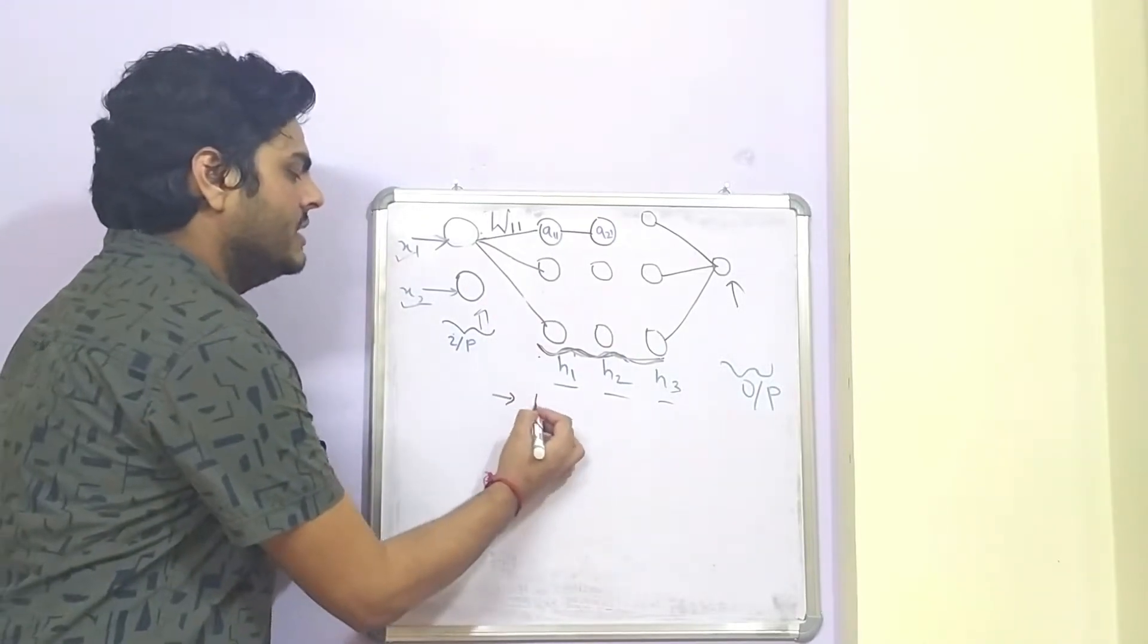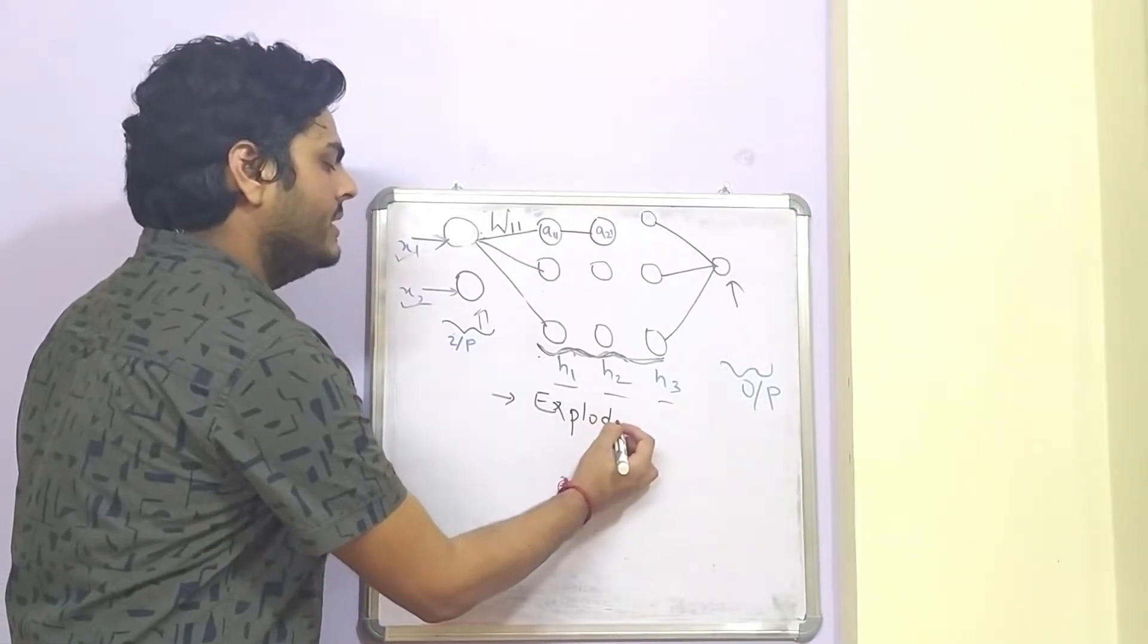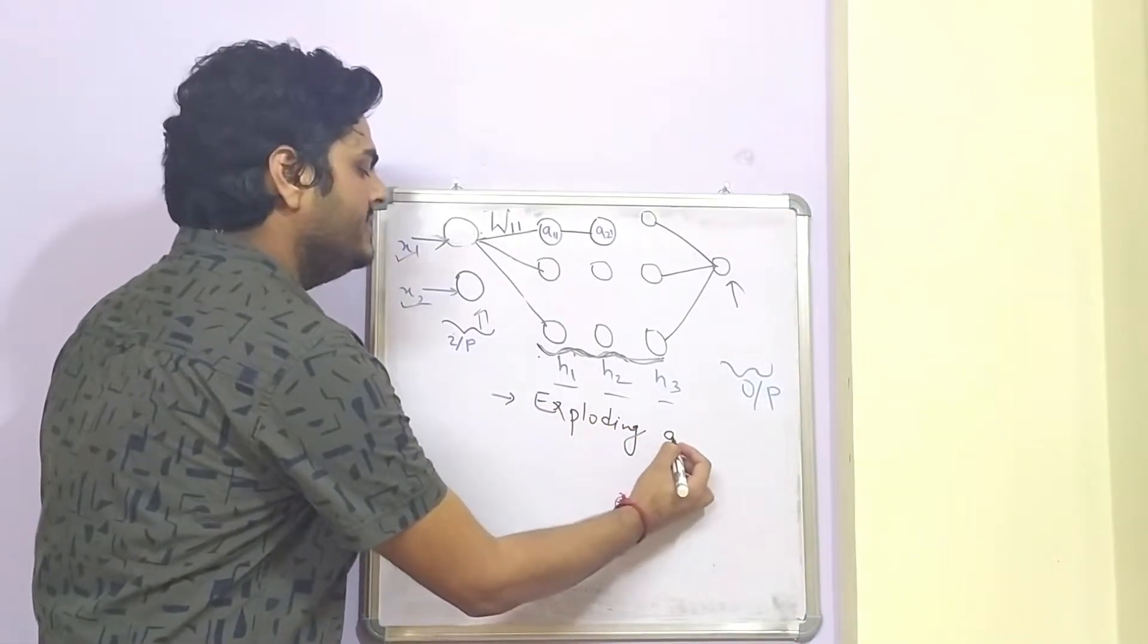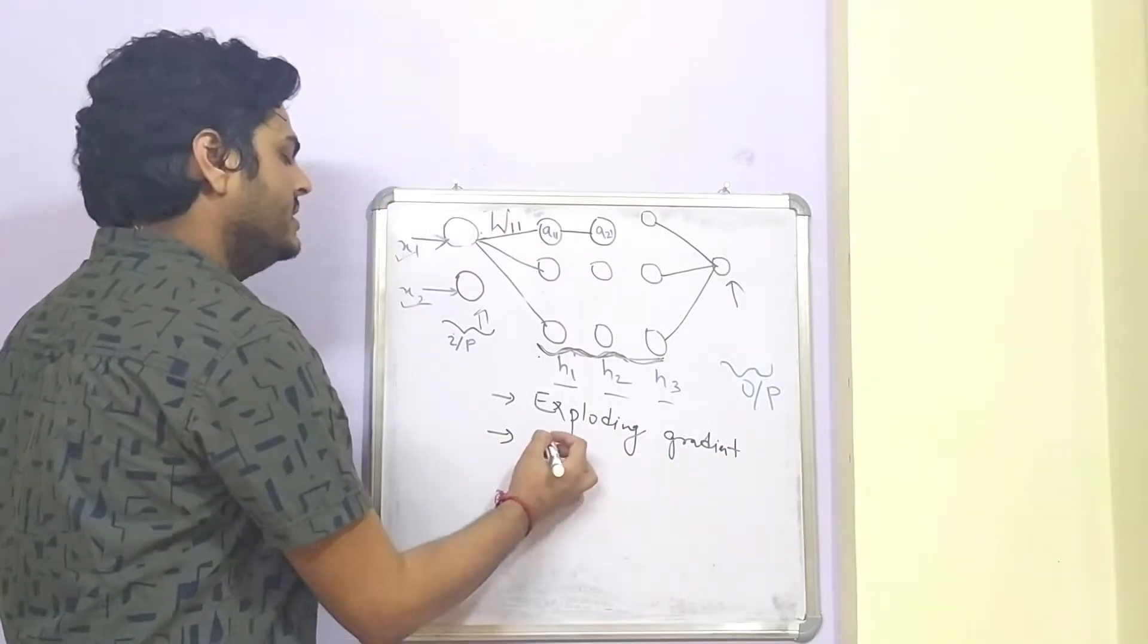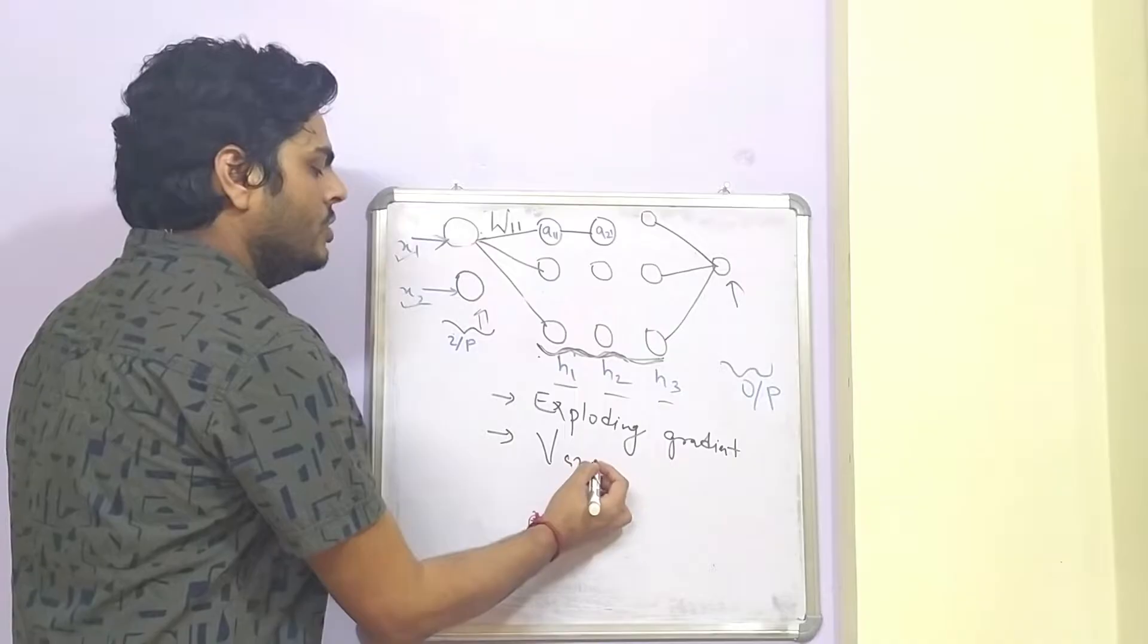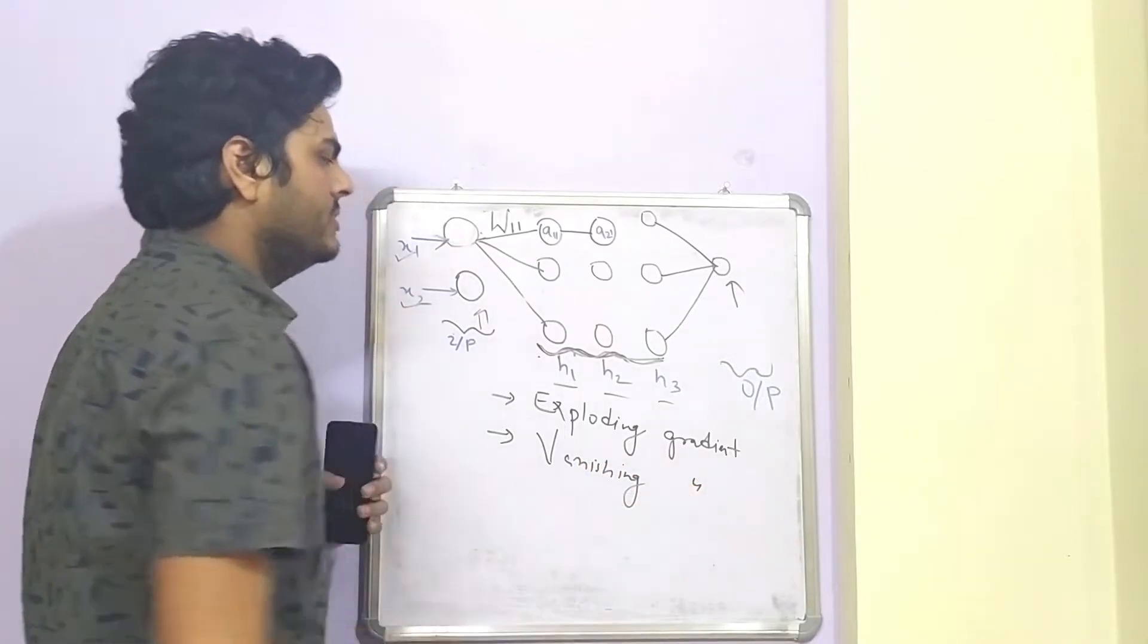One is known as exploding gradient problem. And other is known as vanishing gradient problem. These are the must know concepts if you want to understand how to initialize the weights in neural network.